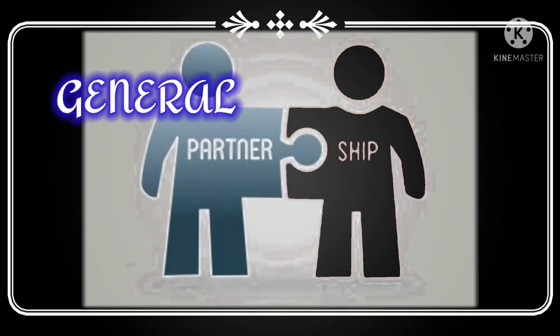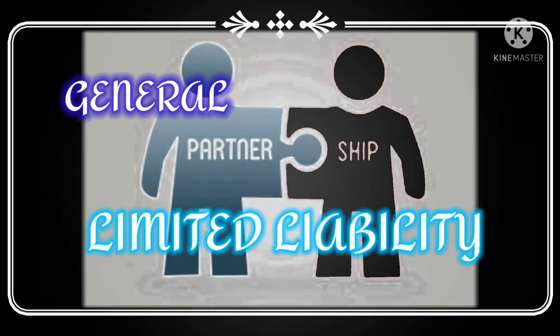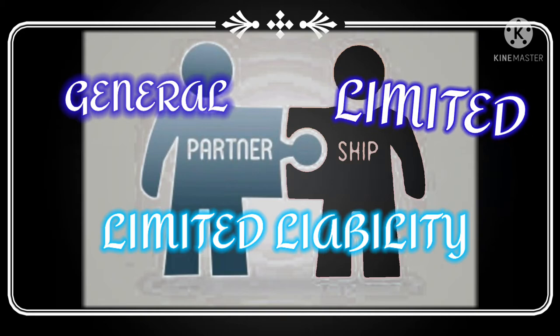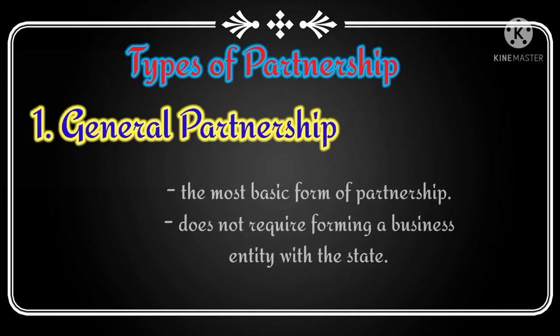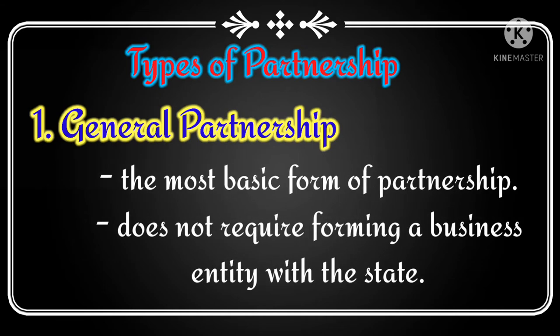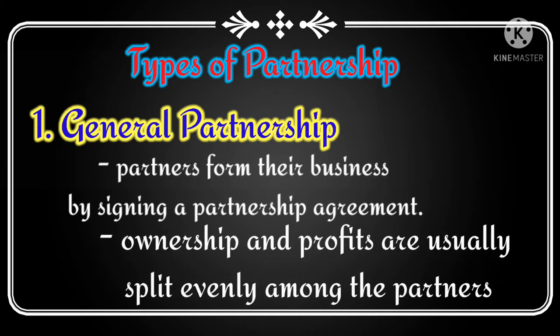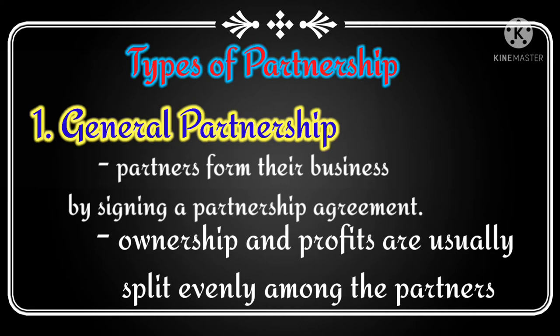A partnership can be a general partnership, limited liability partnership, or a limited partnership. A general partnership is the most basic form of partnership. It does not require forming a business entity with a state. In most cases, partners form their business by signing a partnership agreement. Ownership and profits are usually split evenly among the partners, although they may establish different terms in the partnership agreement.